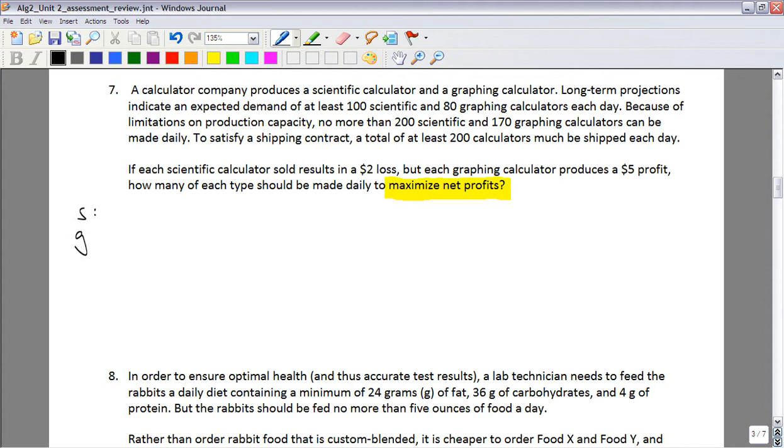So if you read through this problem, you'll notice we're talking about two types of calculators, scientific and graphing. So our variable s is going to be number of scientific calculators. g will be number of graphing calculators. And our profit equation, Profit will be a function of scientific and graphing. Each scientific is sold for a $2 loss, so negative 2s plus 5g, because the graphing calculators make you profit at $5 each.